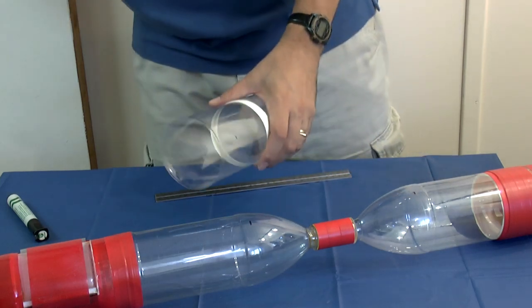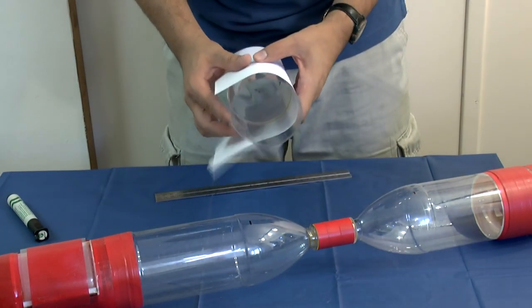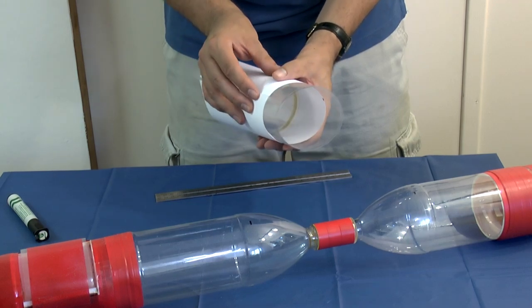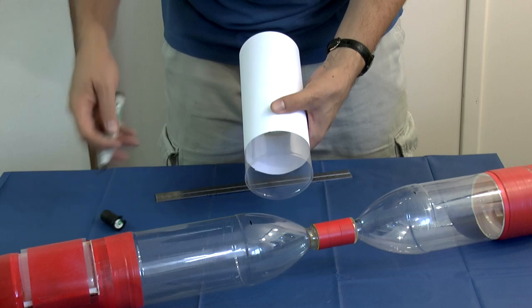Next we need to draw a mark all the way around. The easy way of doing that is just get a piece of paper, line it up. That gives you a nice parallel line around the mark.